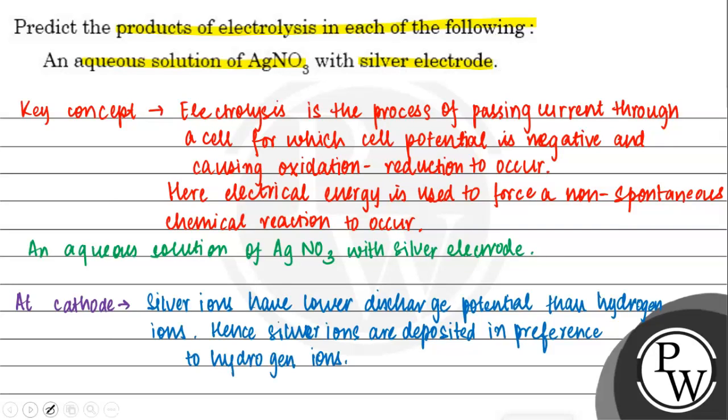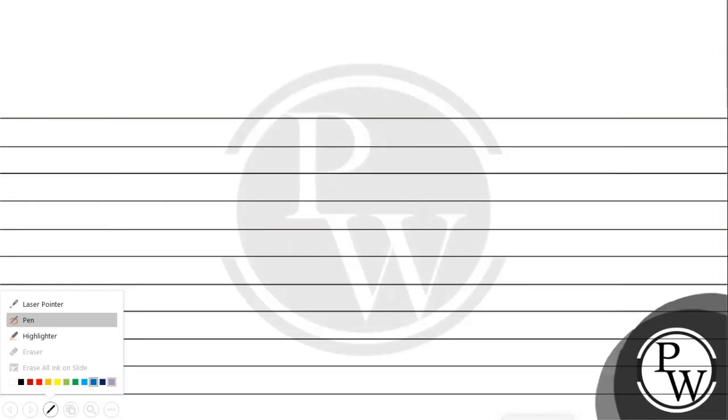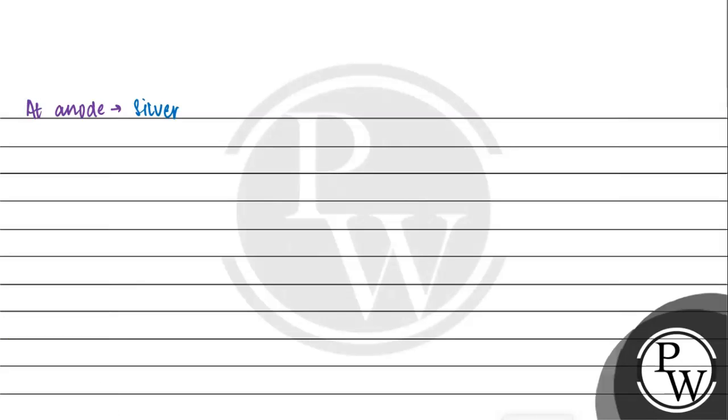Now at anode, the silver anode will dissolve to form silver ions in the solution.